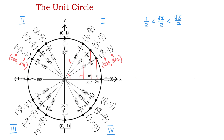In quadrant 1, as the angle increases, the value of sine also increases. But notice that as the angle increases, the value of cosine decreases — going from 1, to √3/2, to √2/2, to 1/2, to 0. That concludes this video. I hope you enjoyed it. Please subscribe and thank you for watching.